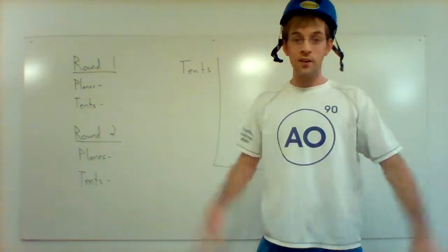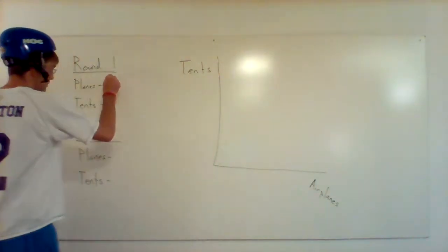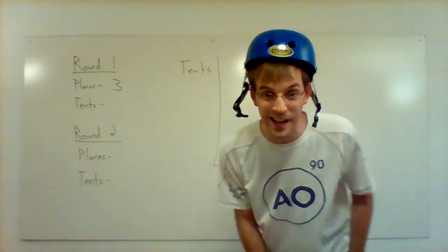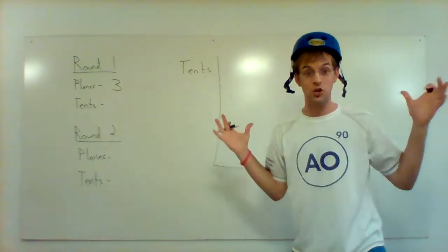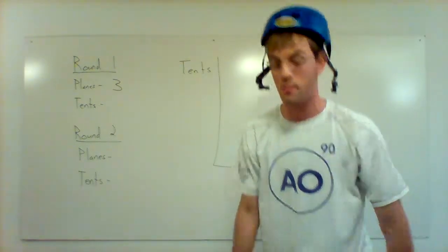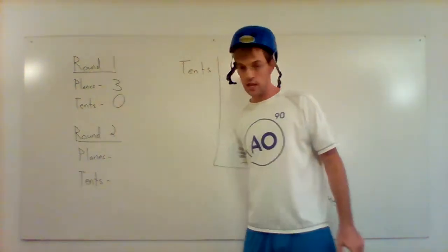Okay. So let's say I made three paper airplanes in the first round. Now, just out of curiosity, how many tents did you make? Not a trick question. The answer should be zero. I didn't tell you to make any tents. I said no tent making. I said just make paper airplanes. So in the first round, you made three planes and zero tents here.